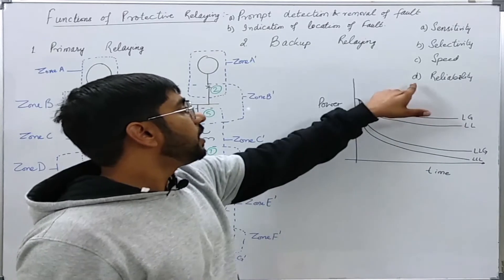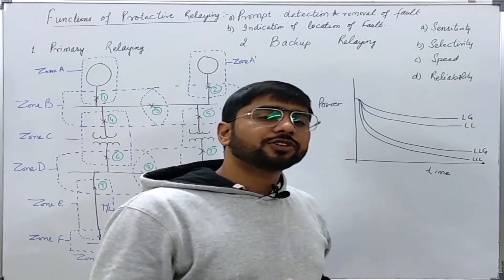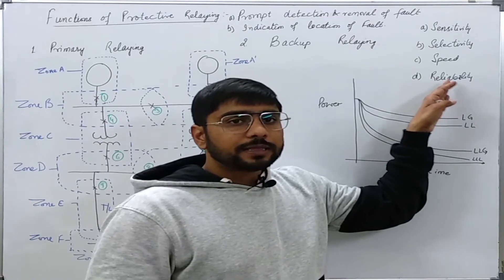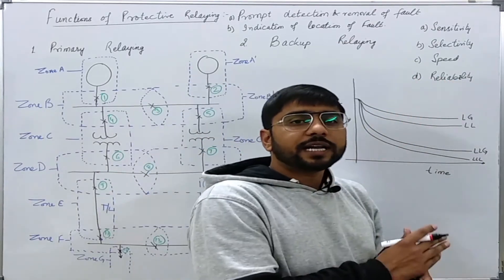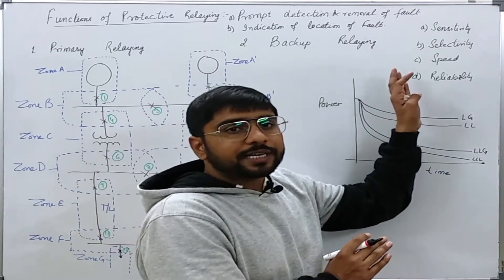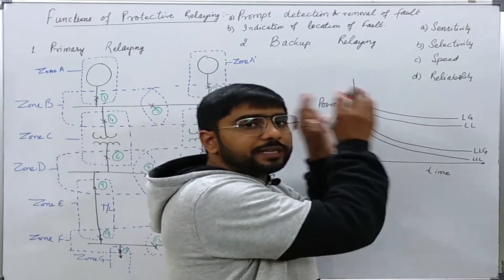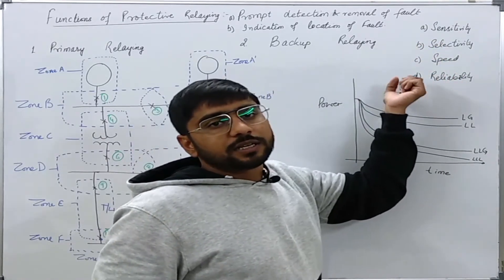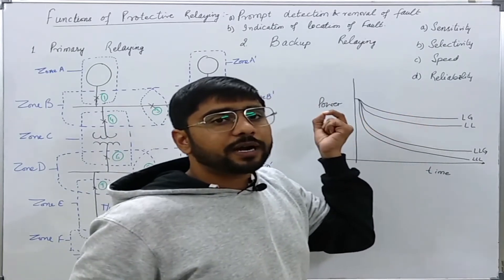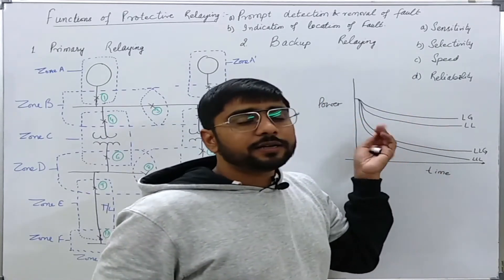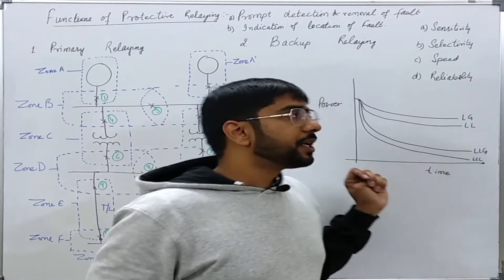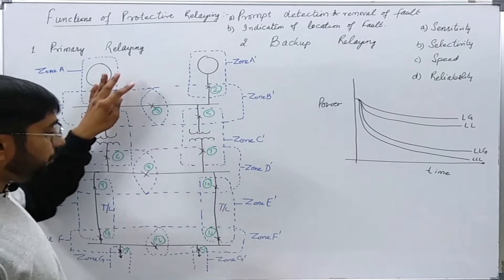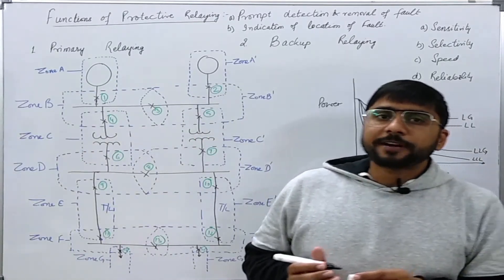The system should also be reliable. Reliability is the probability that a system will be performing its intended function at a given point in time. We can improve reliability by improving redundancy, improving design, and improving relay settings and their coordination. These are the desired qualities of a protective relaying system.